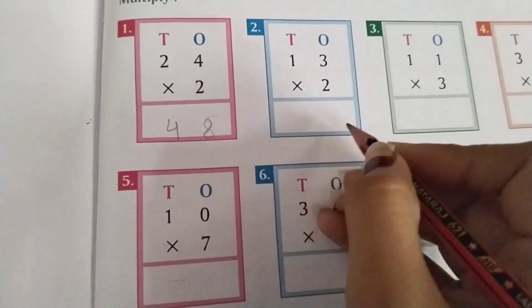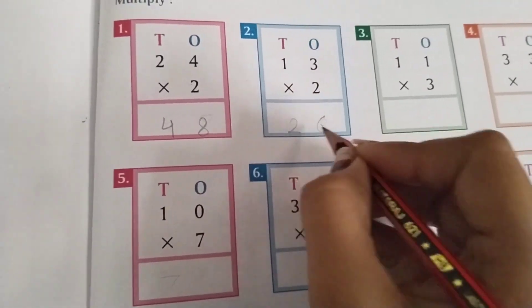13 multiply by 2. 2 3s are 6. 2 1s are 2. 26 will be the answer.